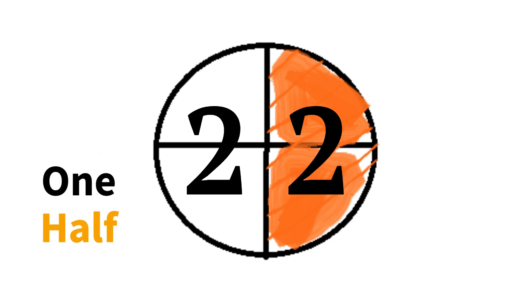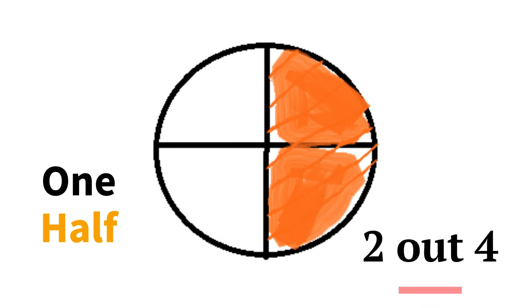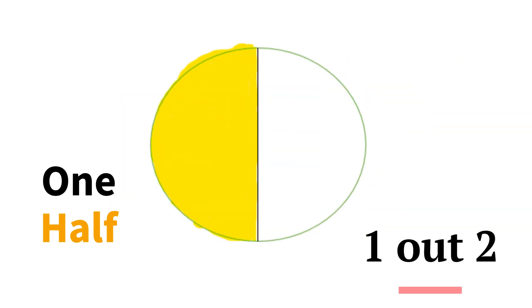So a fraction like that is called a half. We have two and two — it's equal, it's called a half. It's two out of four. But two out of four, when we reduce it, we get one half. Another way to represent a half is to have two equal parts and shade one out of two — that's called a half. One out of two is called a half, but two out of four is also a half. So don't be confused, boys and girls.